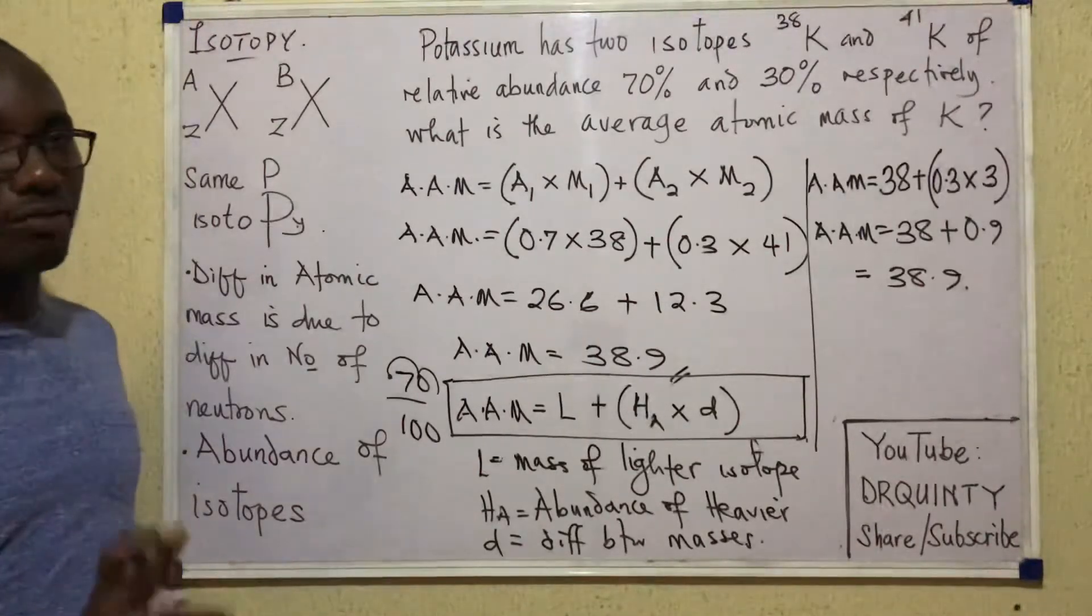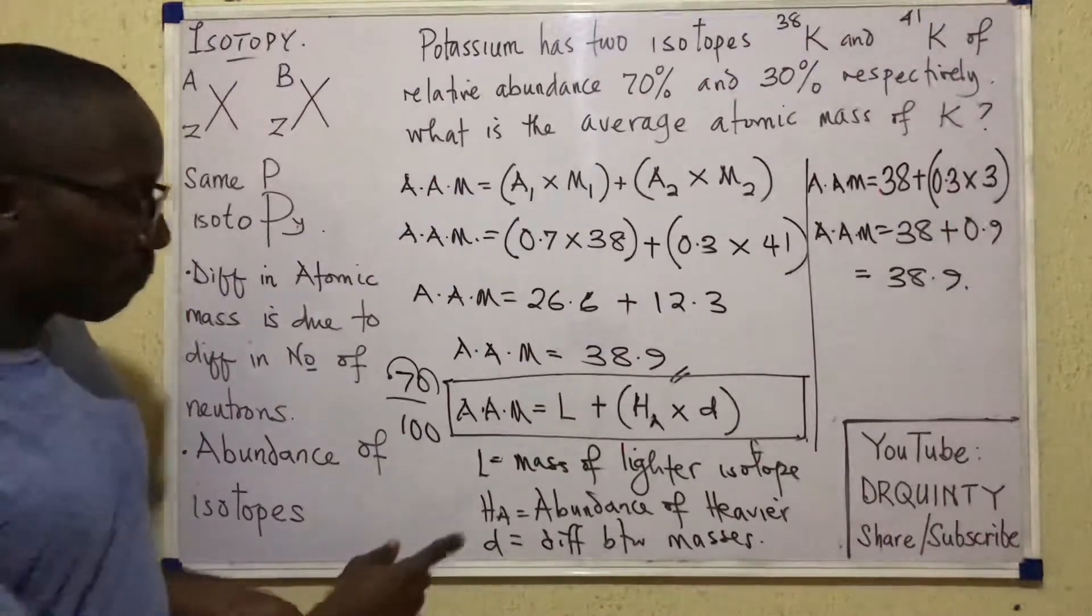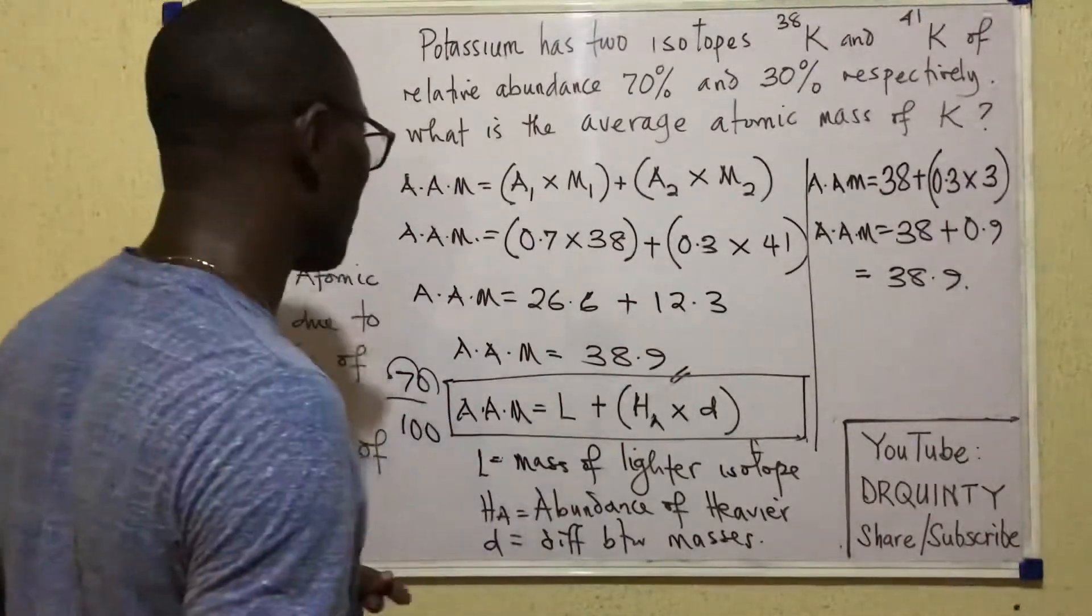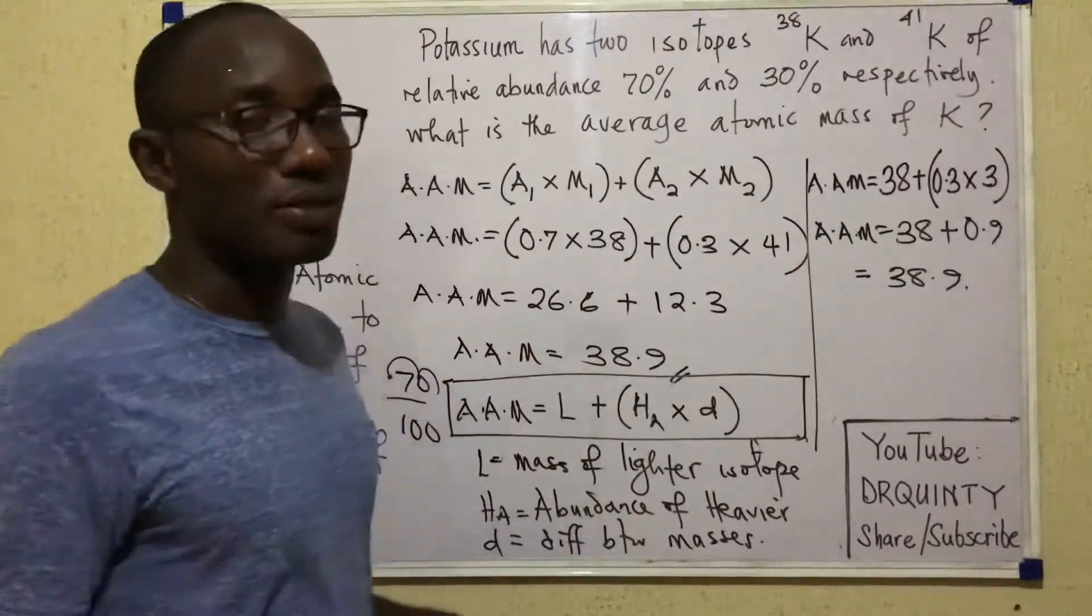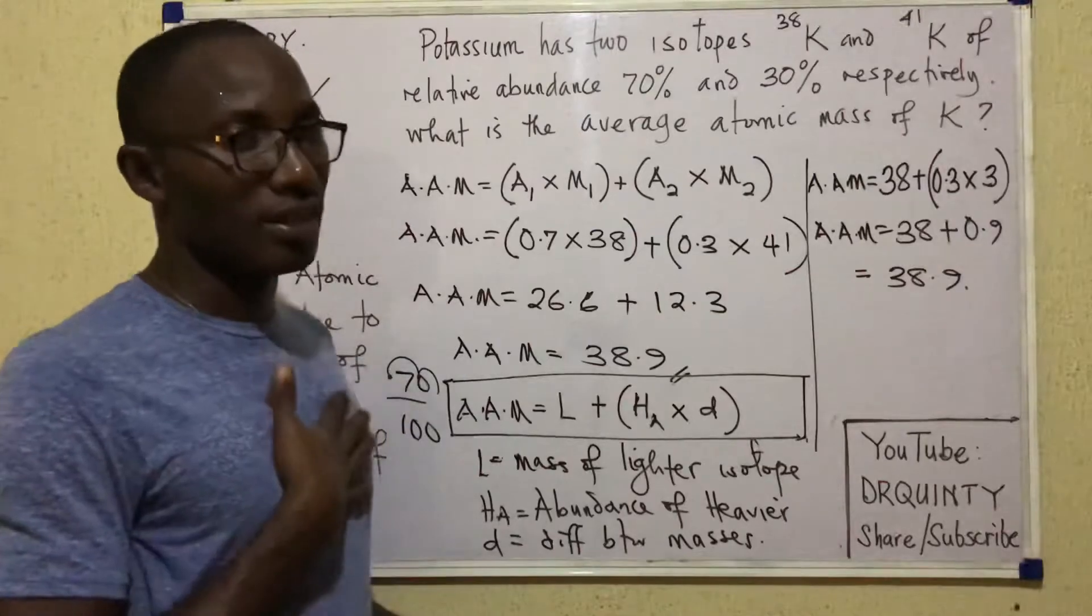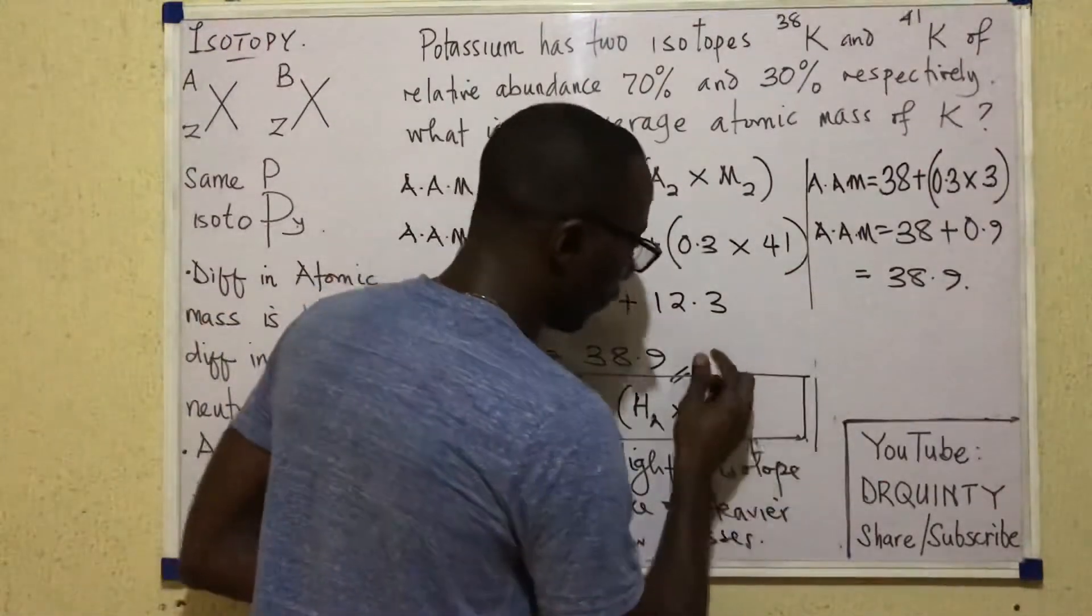So this is a very simple formula that we can use to calculate average atomic mass for isotopes, especially in cases where you have just two isotopes. Some other persons write this formula in another way. They write it as, well, I've said some other persons, but it's not a popular formula. I've never seen this before. I write it in some other way.